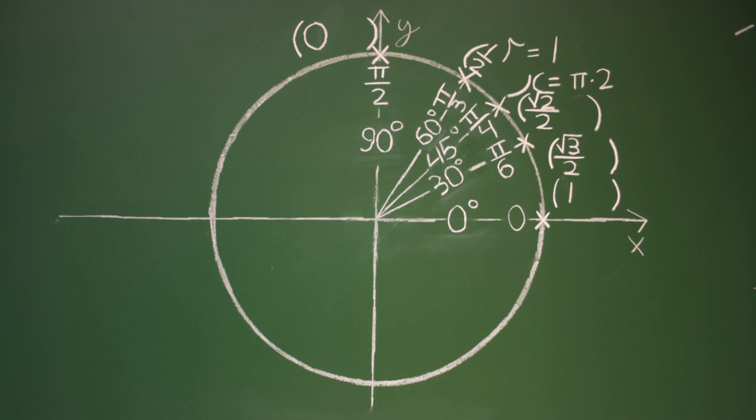0, 30, 45, 60, 90, that's why I love unit circle trigonometry. 0, 30, 45, 60, 90, that's why I love unit circle trigonometry.